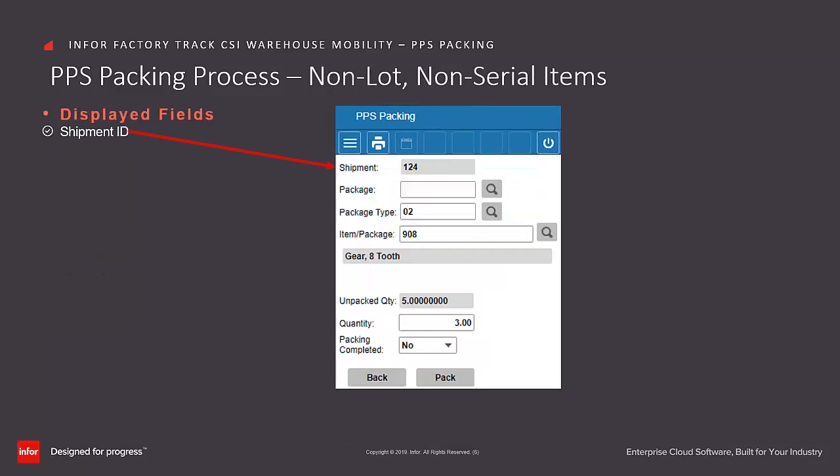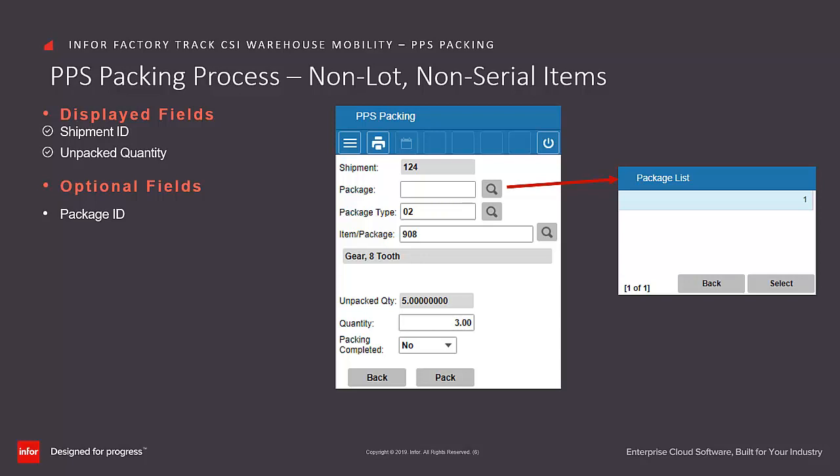To process PPS Packing for a non-lot, non-serial item, the PPS Packing screen will display fields associated with the previous selection screen. These are the Shipment ID and the Unpack Quantity, which is the remaining amount to be packed based on the selected item. Note that this only applies when an item is selected for packing and will be hidden if a package record is selected. You can enter, scan, or search and select the Package ID into which you will be adding this item or package. If this is the first item being packed for this shipment, no package will be available and this field should be left blank. If this is the first item being added into a new package, leave this blank as well, and a new Package ID will be created by the application.